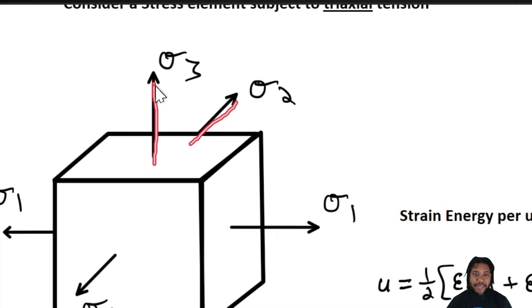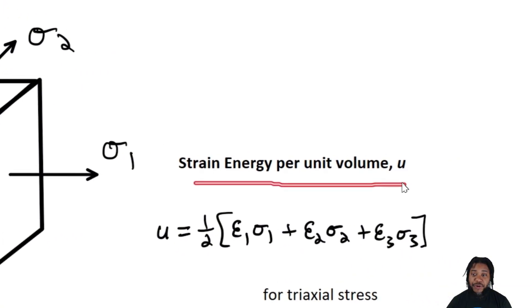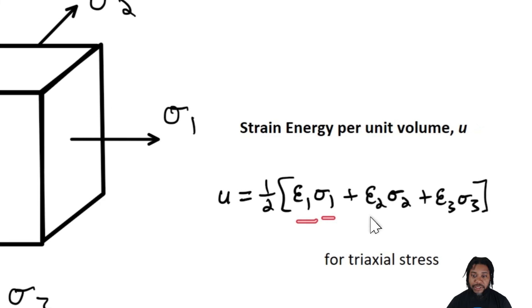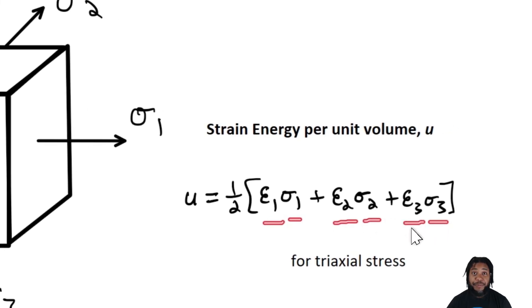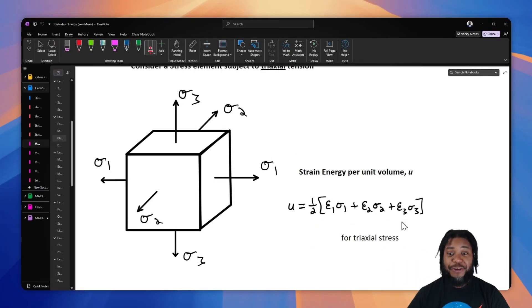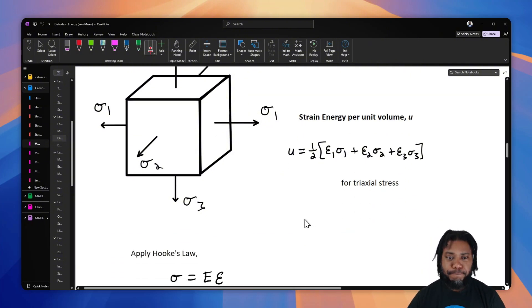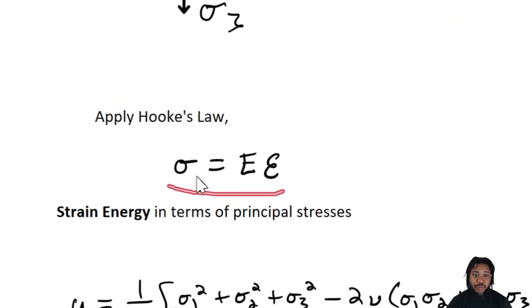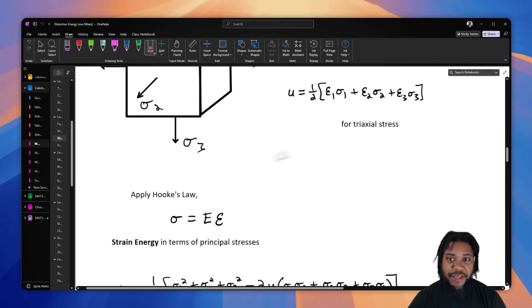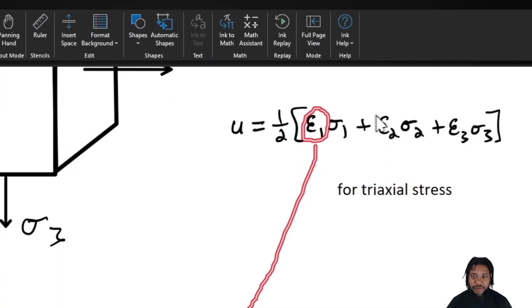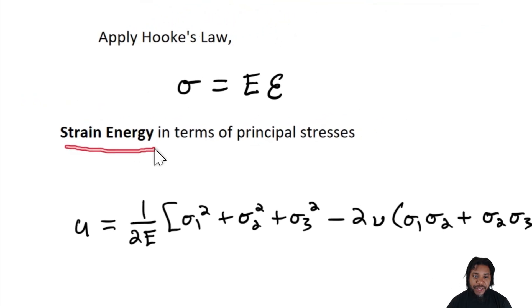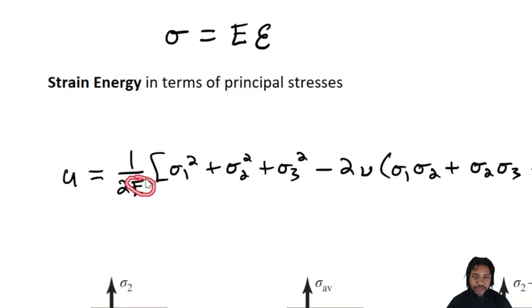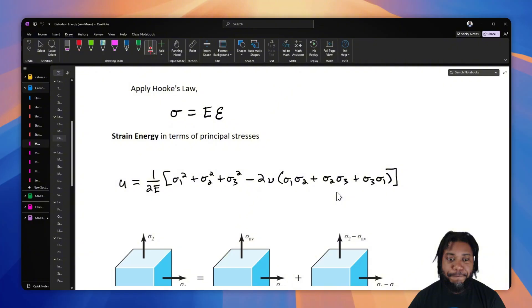Now let's consider a stress element subject to triaxial tension. So we are loading in every normal direction to a value of sigma 1, sigma 2, and sigma 3. In that case, the strain energy per unit volume is calculated as follows: that energy U is equal to one half in brackets, eta 1 times sigma 1 plus eta 2 times sigma 2 plus eta 3 times sigma 3. So we have a much longer equation. We're taking the energies that are accumulating in every direction in this volume. Now let's do something to this. Right now we have it in terms of stress and strain. Let's apply Hooke's law and let's replace the strains that we see with stress in this equation. Let's replace all of these strains with stress and then we end up with strain energy all in terms of principal stresses. So we end up with this very long form equation. It's all in terms of stress. We have Young's modulus and we have Poisson's ratio inside of this equation.